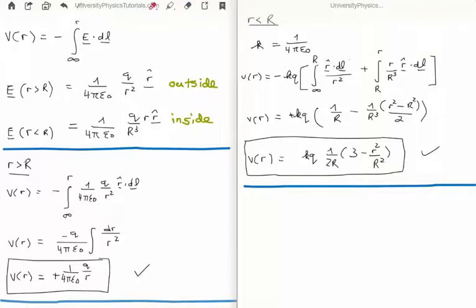So when small r is greater than capital R, or we're outside the sphere, we have a pretty straightforward integral which we're not going to go through, and we get that V of r is 1 over 4 pi epsilon 0 times q over r, which is exactly what we'd expect, and in fact we have seen quite a few times already.